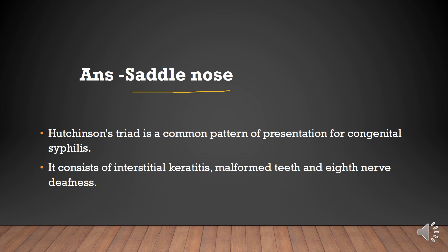Saddle Nose. Hutchinson's Triad is a common pattern of presentation for congenital syphilis. It consists of interstitial keratitis, malformed teeth, and 8th nerve deafness.